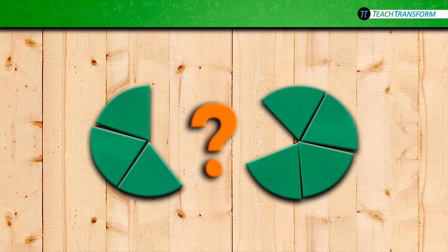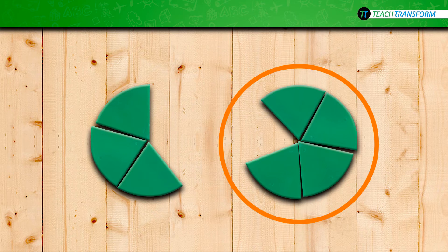Now let's compare them. Which one is larger, four-fifths or three-fifths? It's pretty easy to see that four-fifths is larger than three-fifths. Four-fifths has more fifths in it than three-fifths does. Four-fifths is more of the whole than three-fifths is.